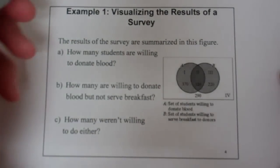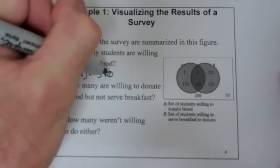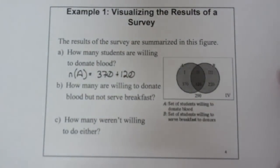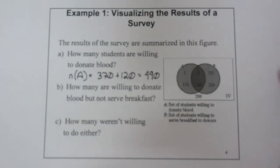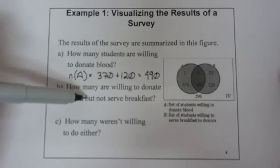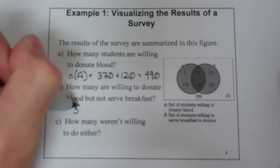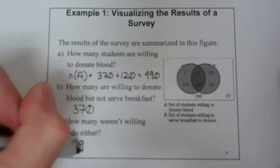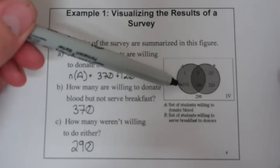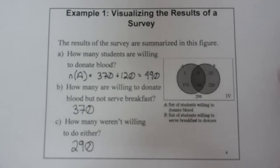So how many students are willing to donate blood? That would be all of the students in set A. The cardinal number for set A is going to be the 370 students in Region 1 and the 120 students in Region 2. Adding those up, you get 490 students. How many are willing to donate blood but not serve breakfast? That's just Region 1, so the cardinal number there is 370. And how many weren't willing to do either? That's Region 4, and that's the 240 we already talked about.